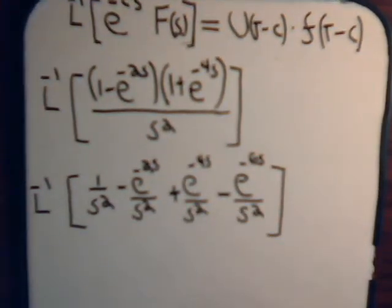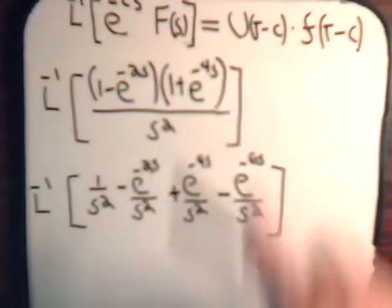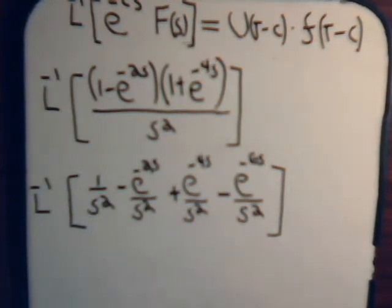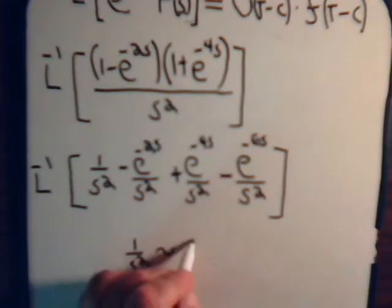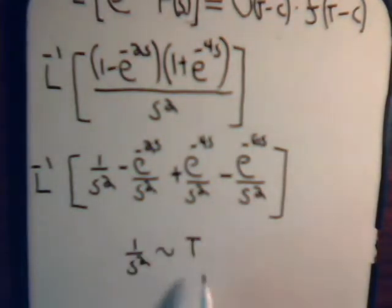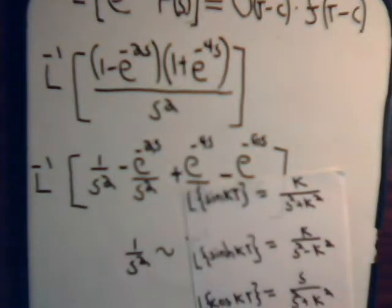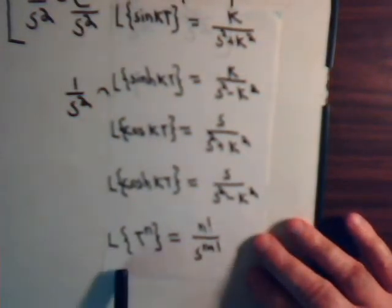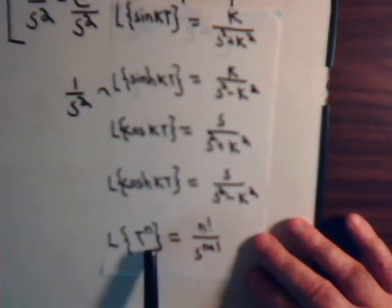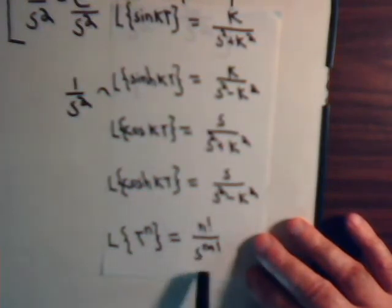This problem looks very similar to the previous one. The F of s is the same in each case — it's 1 over s squared — and that corresponds to the function t. If we have t raised to the first power, its Laplace transform is 1 over s squared, which follows from a simple formula derived in the previous videos.